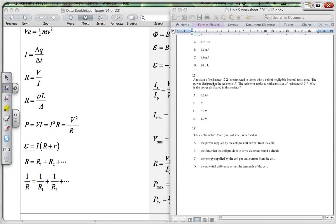Question 11. A resistor of resistance 12 ohms is connected in series with a cell of negligible internal resistance. The power dissipated in the resistor is P.